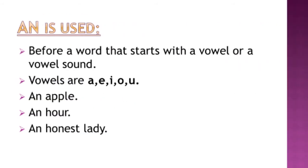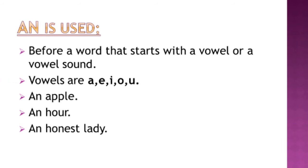'An' is used before a word that starts with a vowel or a vowel sound. Vowels are a, e, i, o, and u. For example: an apple, an hour, an honest lady.